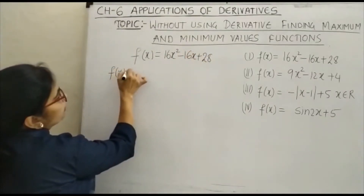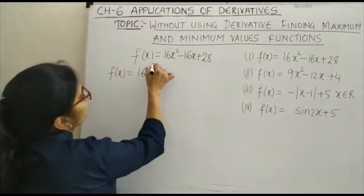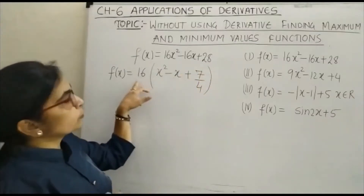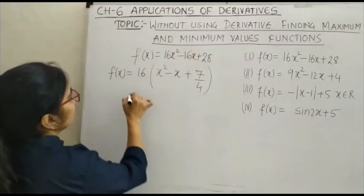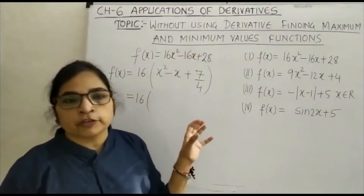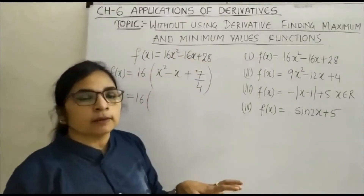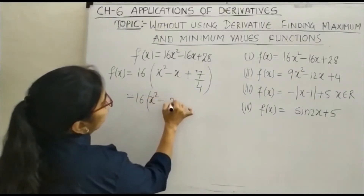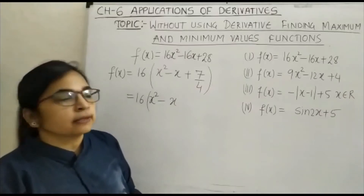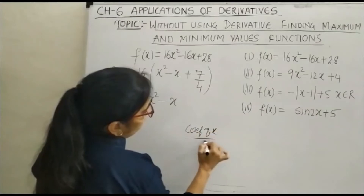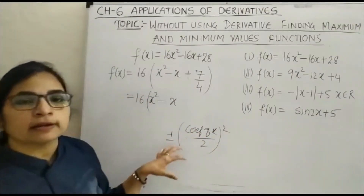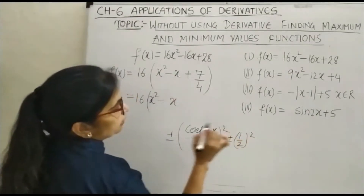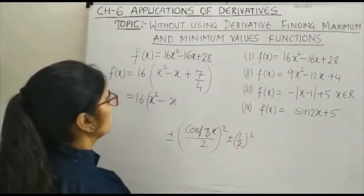Just see this f(x) — you can take 16 common. So 16 common gives x² - x + 7/4, because 4×4=16 and 4×7=28. Now we know how to make the perfect square. For any quadratic in perfect square form, our priority is that the coefficient of x² should be 1. You can see here the coefficient of x² is 1. The method for making the perfect square is: take the coefficient of x, divide by 2, and square it — add and subtract that term.